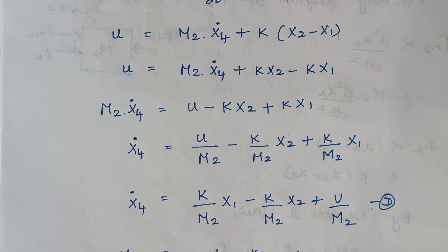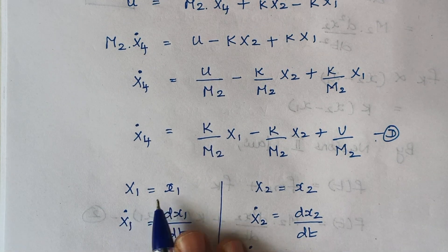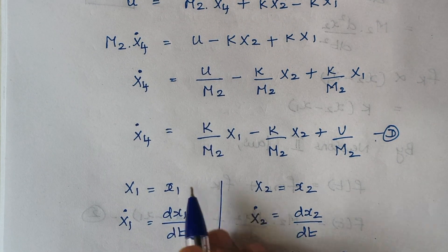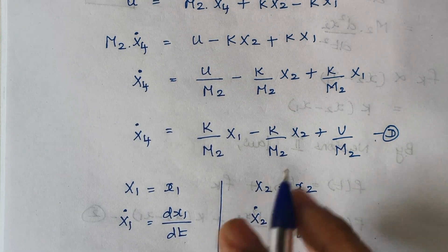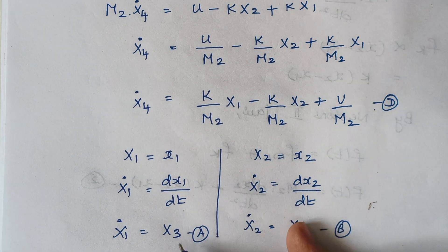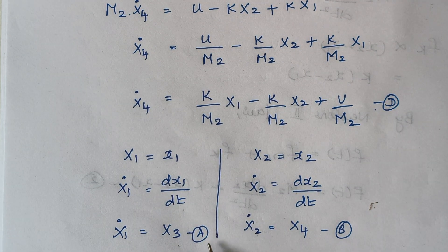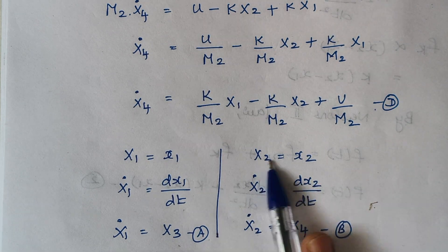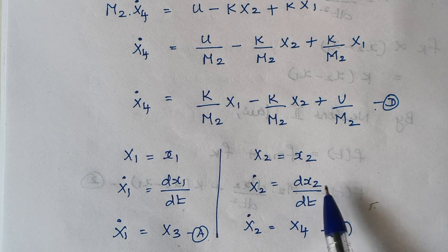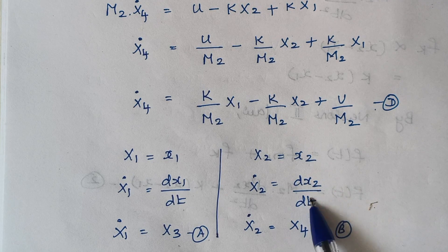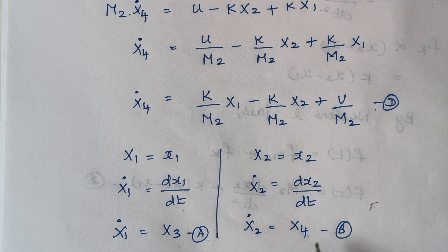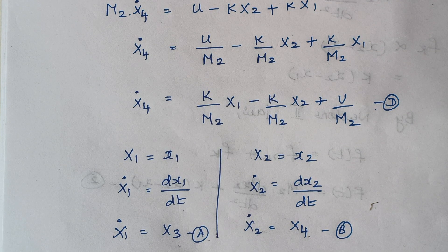Now consider the first two state variables. x1 = x1; differentiating gives ẋ1 = dx1/dt = x3 — mark this as equation (a). Similarly, x2 = x2; differentiating gives ẋ2 = dx2/dt = x4 — mark this as equation (b). So finally we have framed expressions for ẋ1, ẋ2, ẋ3, and ẋ4.